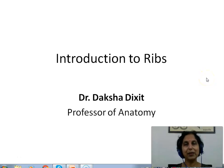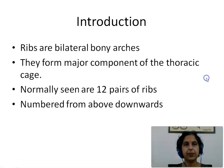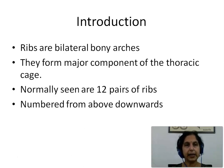Hello friends. Today we will be studying the introduction to ribs. Ribs are bilateral bony arches. They form a major component of the thoracic cage, normally seen as 12 pairs of ribs, numbered from 1 to 12 from above downwards.